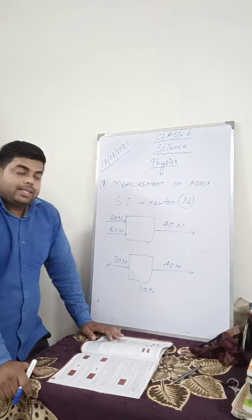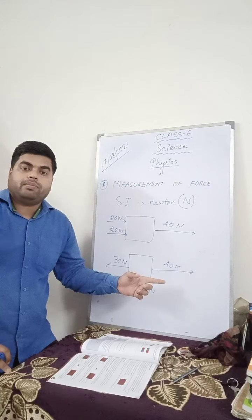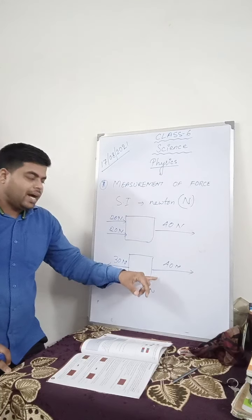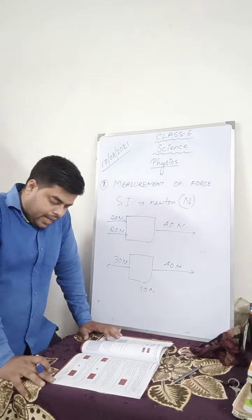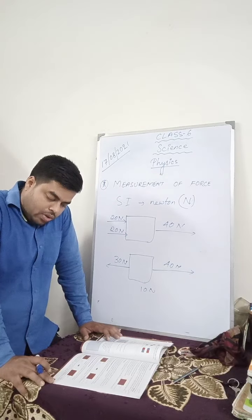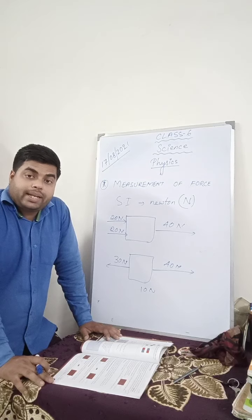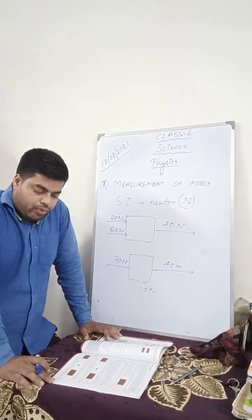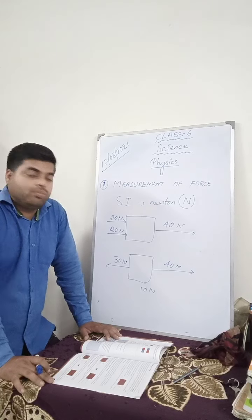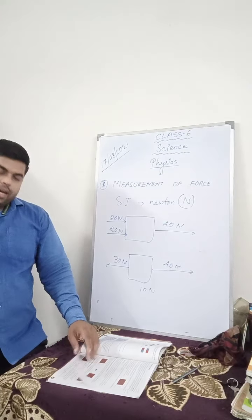The direction of movement of the object will be towards my direction because I am applying greater force than my friend. For example, if a force of 10 Newton acts on the block towards the right and 7 Newton acts towards the left, the resultant force will be 10 minus 7 = 3 Newton, acting towards the right — the direction of the force having greater magnitude.